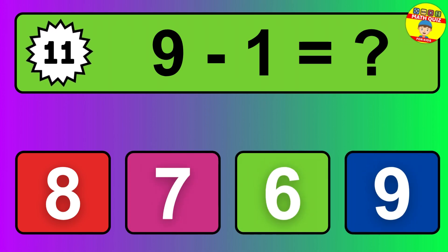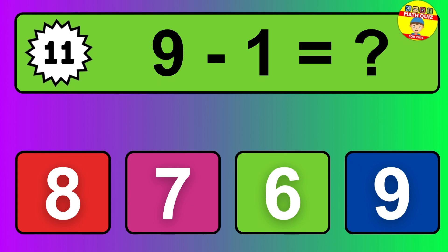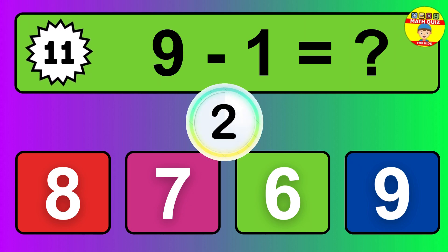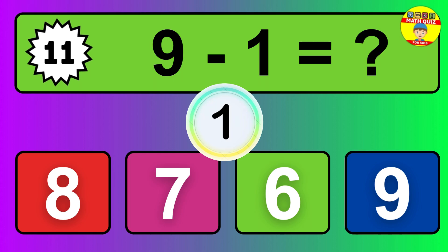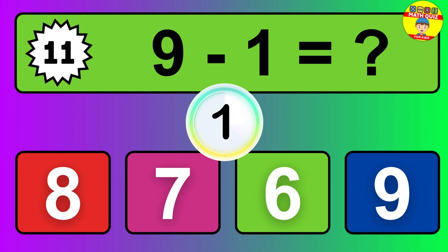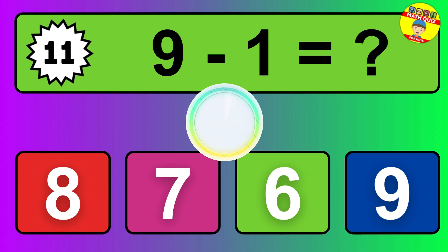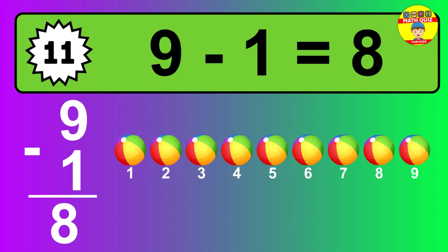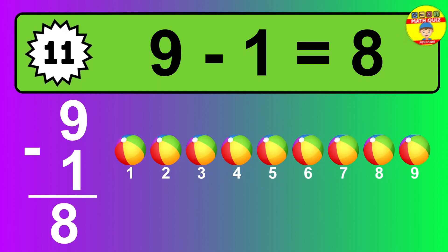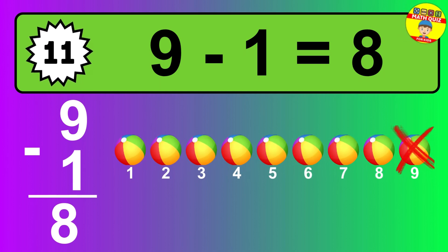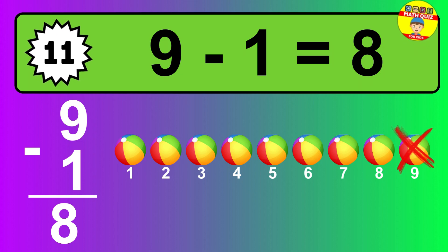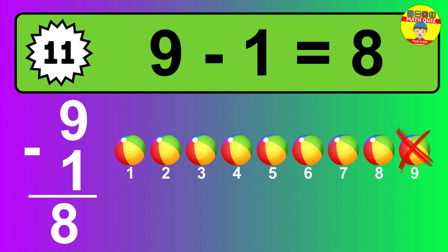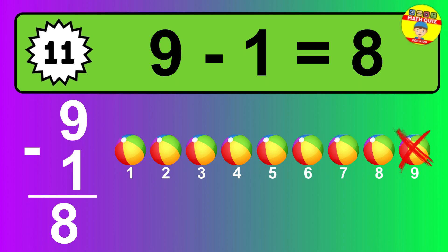Question 11. 9 minus 1 equals what? The answer is 9 minus 1 is 8. Let's count it: 1, 2, 3, 4, 5, 6, 7, 8.